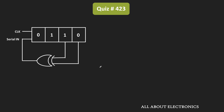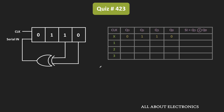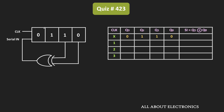We have been given that the initial content of the register is equal to 0110. The four cells of the register are Q3, Q2, Q1, and Q0. That means the serial input is equal to Q1 XOR Q0. So initially, with this content, the output of the XOR gate is equal to 1 XOR 0, which equals 1.